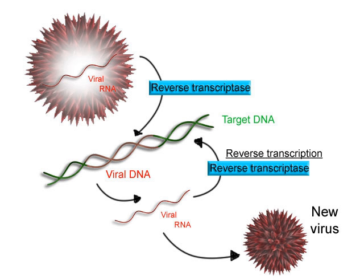Only one of the two DNA strands serves as a template for transcription. The anti-sense strand of DNA is read by RNA polymerase from the 3' end to the 5' end during transcription. The complementary RNA is created in the opposite direction, in the 5' to 3' direction, matching the sequence of the sense strand with the exception of switching uracil for thymine. This directionality is because RNA polymerase can only add nucleotides to the 3' end of the growing mRNA chain.